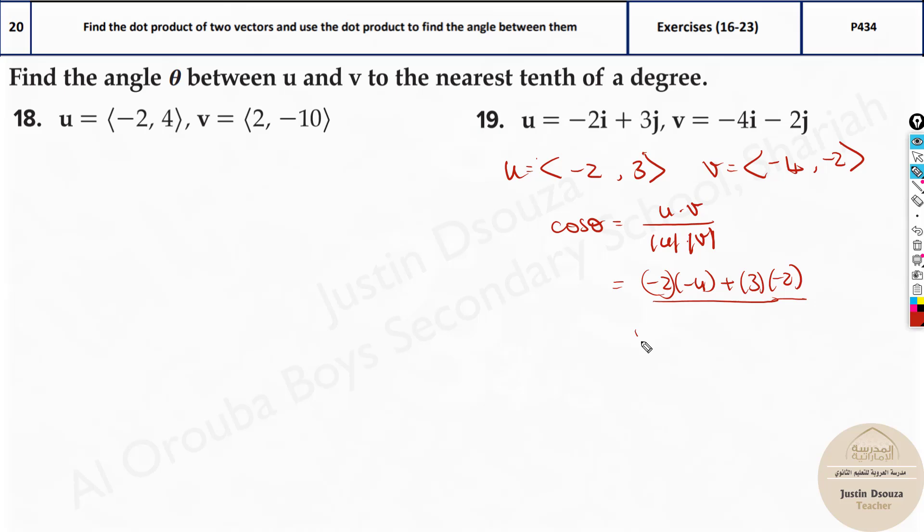It'll be minus 2 times minus 4 plus 3 times minus 2 divided by square root of minus 2 the whole square plus 3 squared, multiplied with the square root of negative 4 the whole square plus minus 2 the whole square.